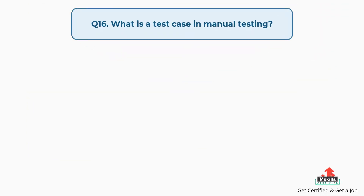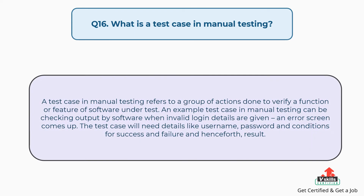Question number sixteen: What is a test case in manual testing? A test case in manual testing refers to a group of actions done to verify a function or feature of software under test. An example test case can be checking output by software when invalid login details are given and an error screen comes up. The test case will need details like username, password and conditions for success and failure, and the result.